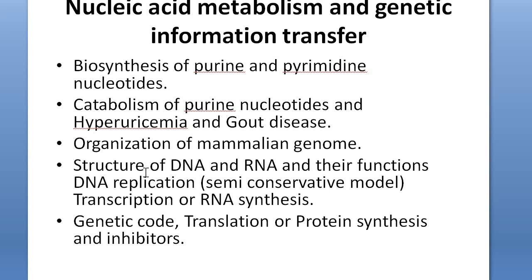In this unit we are going to see mainly purine and pyrimidine nucleotides. After that we will see catabolism of purine nucleotides and the associated diseases — there are two types: hyperuricemia and gout disease. We will also see organization of mammalian genome, structures of DNA and RNA, their function, DNA replication specifically the semi-conservative model, transcription or RNA synthesis, and finally genetic code, protein synthesis or translation, and inhibitors of protein synthesis.